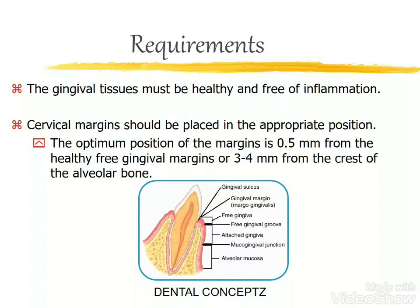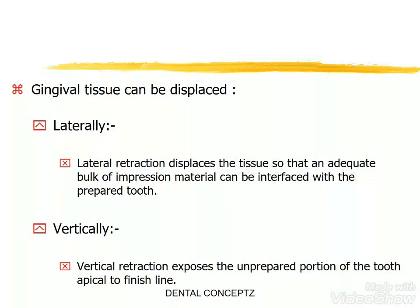The cervical margins should be placed in the appropriate position. The optimum position of the margins is 0.5 mm from the healthy free gingival margin, or 3 to 4 mm from the crest of the alveolar bone. The gingival tissues can be displaced laterally and vertically. Lateral retraction displaces the tissue so that an adequate bulk of impression material can be interfaced with the prepared tooth. Vertical retraction exposes the unprepared portion of the tooth applicable to the finish line.